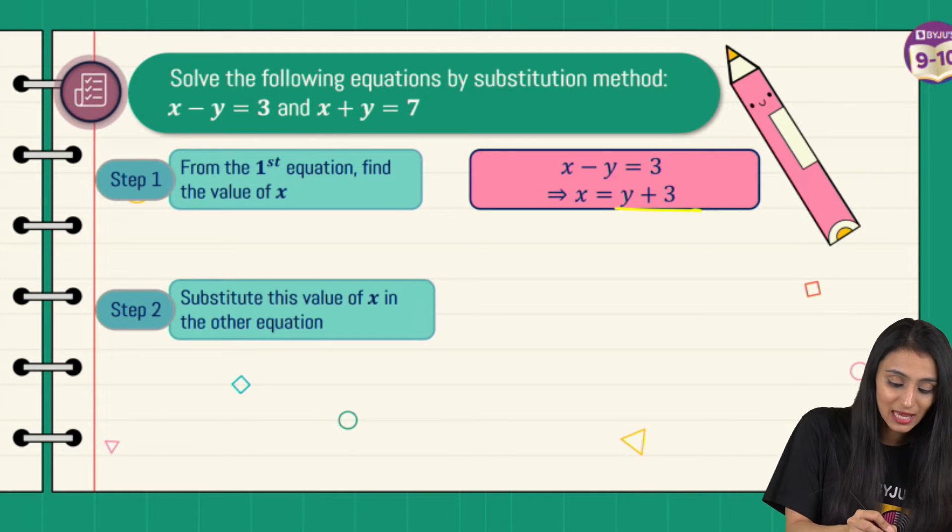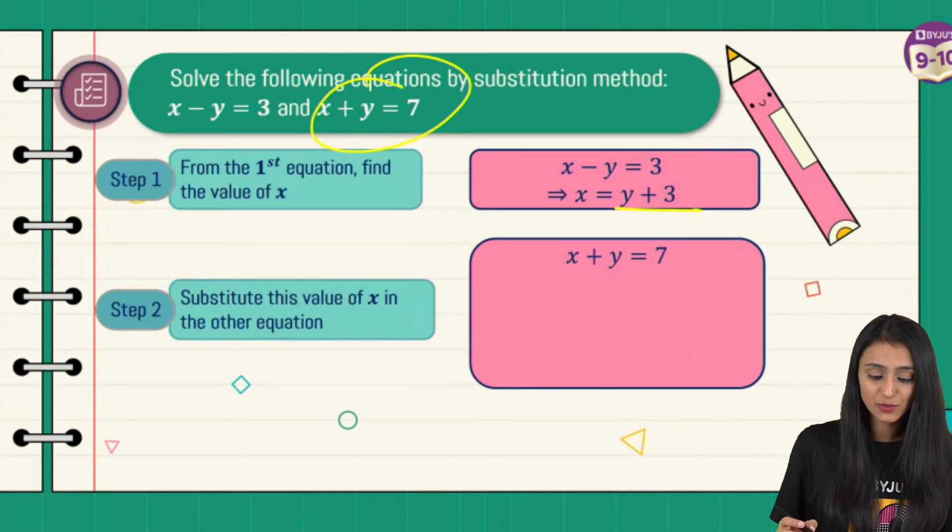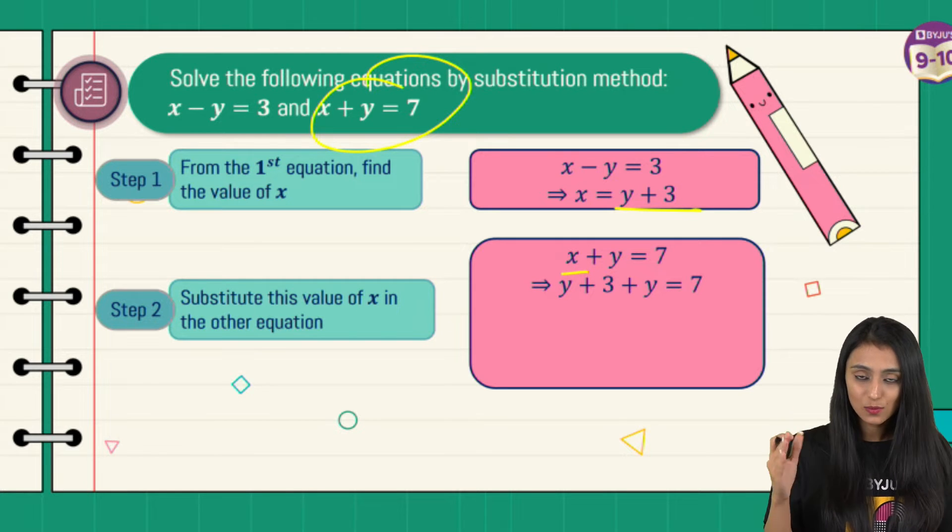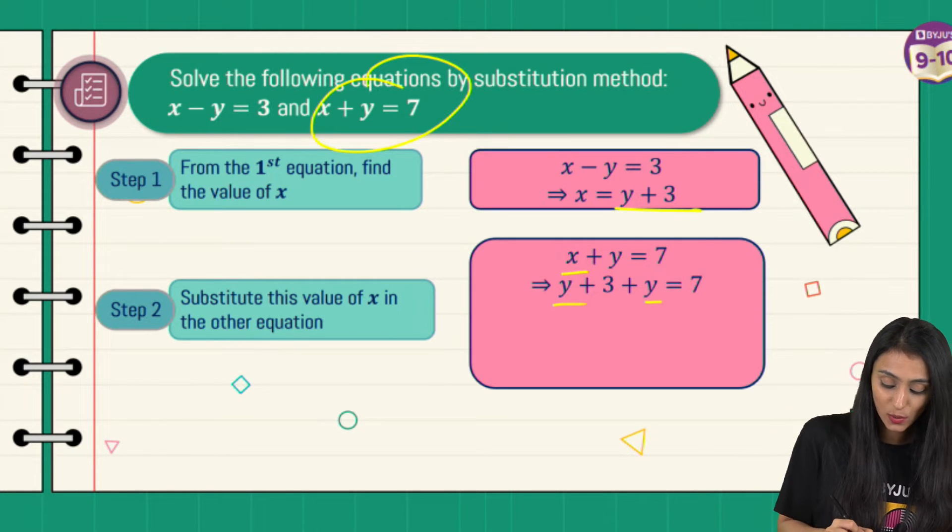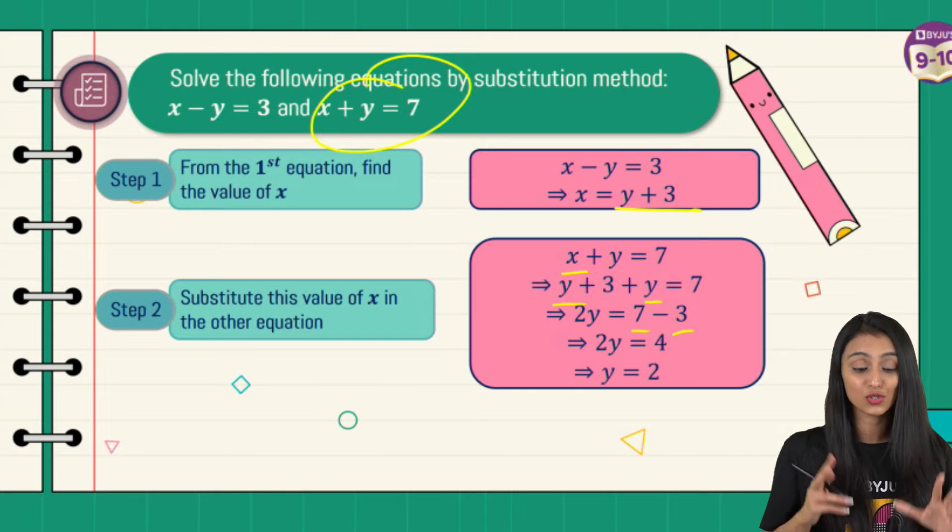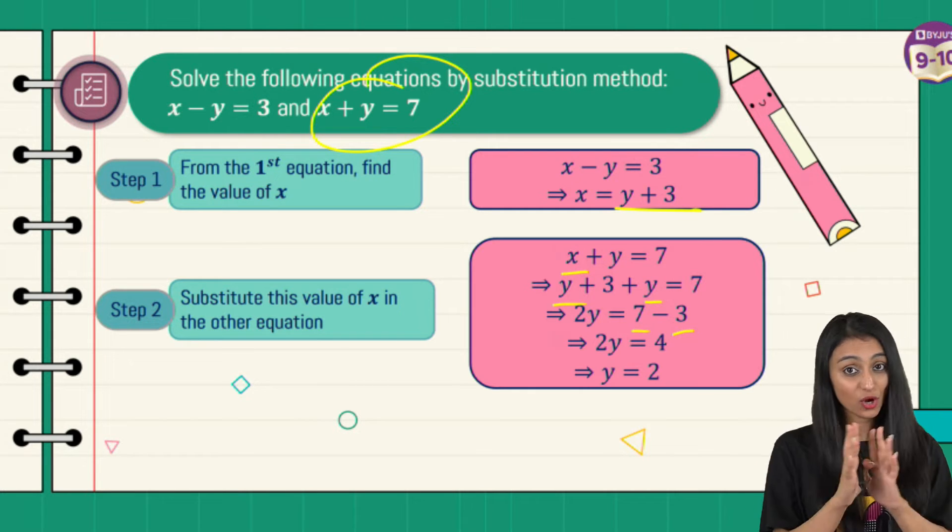Now I'll substitute this value of x in the other equation, which is this one. Once I substitute, in place of x we will write y plus 3 plus y equals 7. So y plus y is 2y plus 3 equals 7. So 2y equals 7 minus 3, 2y equals 4, y equals 2. So I have the value of y, I've got the value of one of the variables.